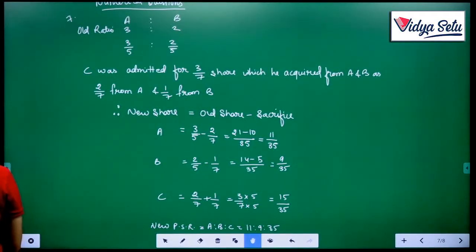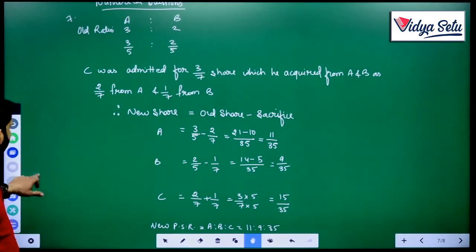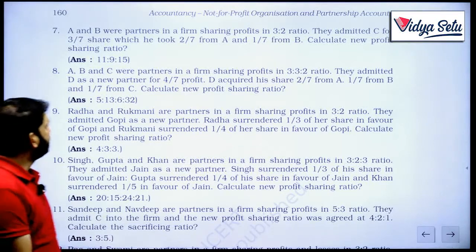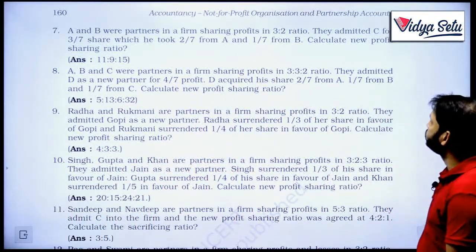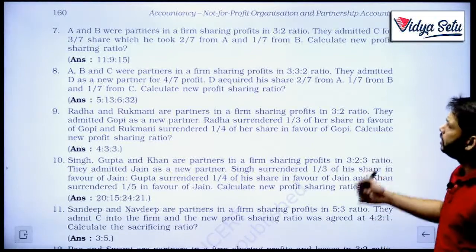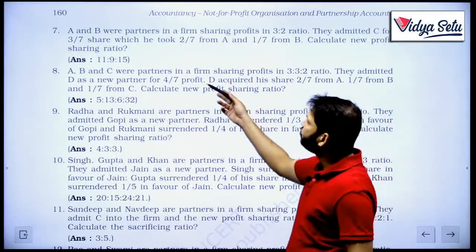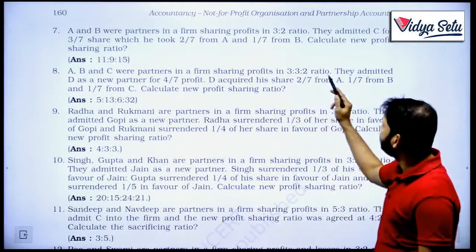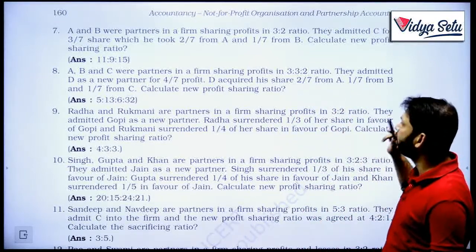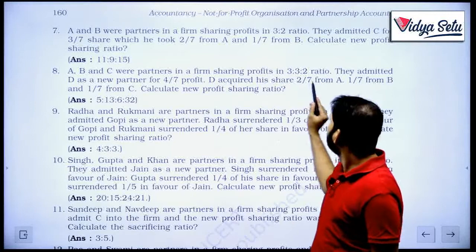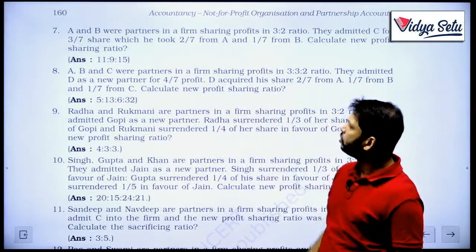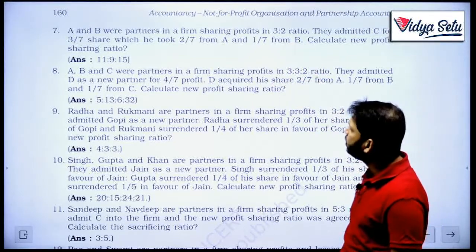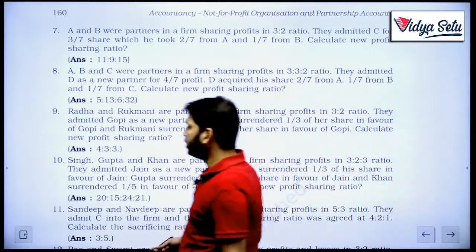Next, we are starting with question number 8. Let us look at question number 8. A, B and C were partners in a firm sharing profits in the ratio of 3 to 3 to 2. They admitted D as a new partner for 4/7 profit. D acquired his share 2/7 from A, 1/7 from B and 1/7 from C. So 2/7 plus 1/7 plus 1/7, 2 plus 1 plus 1, 4/7, so exactly like the seventh one. So let us quickly do it.